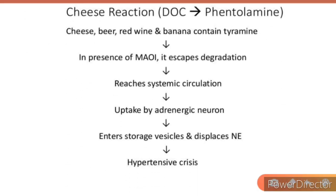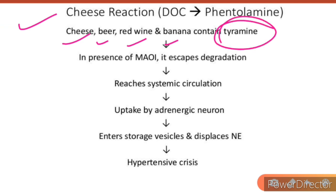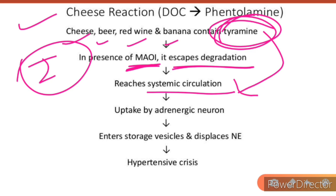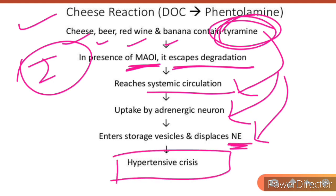Regarding the cheese reaction: substances like cheese, beer, red wine, and banana contain tyramine. In the presence of monoamine oxidase inhibitors like isoniazid, tyramine escapes degradation and reaches the systemic circulation. It is then taken up by adrenergic neurons, enters storage vesicles, and displaces norepinephrine, resulting in a hypertensive crisis. To manage this, the drug of choice is phentolamine.